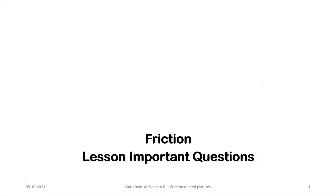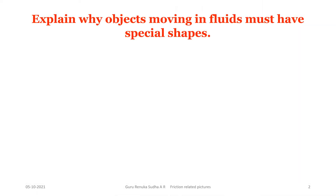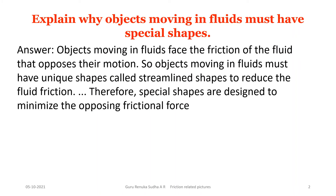In the friction lesson, an important question asks: explain why objects moving in a fluid must have a special shape. This question is based on the concept of drag. Objects moving in a fluid face friction from the fluid that opposes their motion, so they must have a unique shape called a streamlined shape to reduce fluid friction.